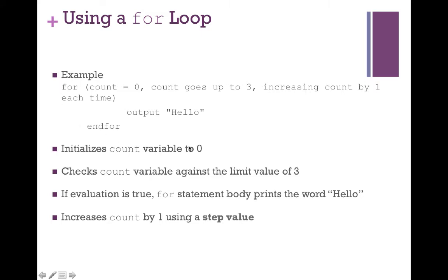This initializes a count variable to zero, checks to see if it's less than three, and if it's true we print out hello. After printing hello, we reach the last piece of our for loop and increase count by one, then the evaluation happens again.